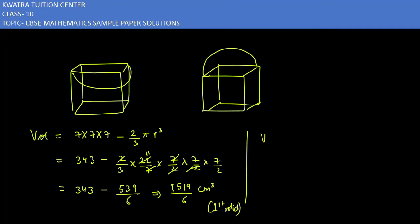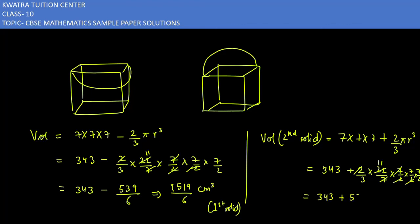Volume of second solid. It would be 7×7×7 plus 2/3 πr³. 7×7×7 is 343 plus 2/3. Pi value is 22/7 and r is 7/2. 2 and 3 will cancel, 2 and 22, 7 and 7 will cancel. So you have 343 plus 539 divided by 6, and the value you will get is 2597 divided by 6 cm³.